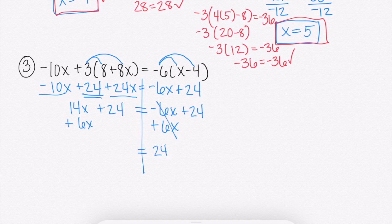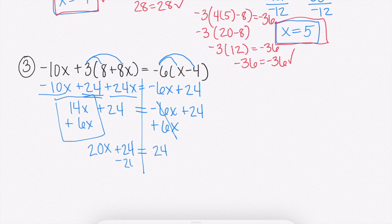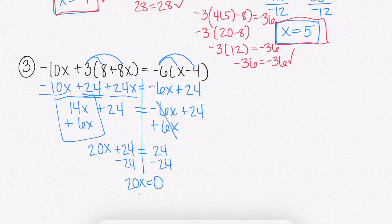And then on the left-hand side, I have to, that 6x can't go with 24, but it can go with its like term. So 14x and 6x combined would get us 20x plus 24 equals 24. So I'm going to subtract 24 from both sides now. I get 20x equals 0, which means x would have to equal 0, because 20 times what gets you 0? 0 times anything is 0.